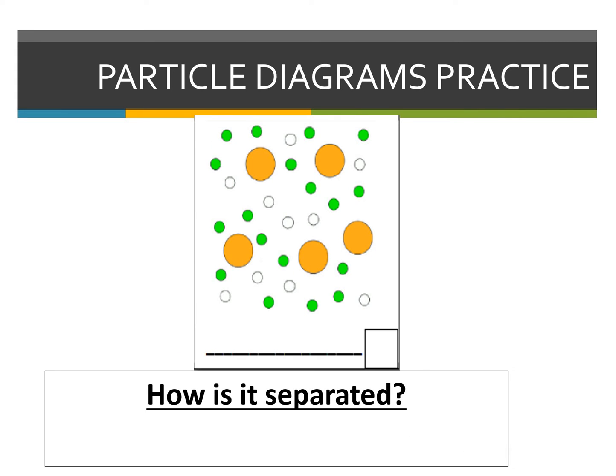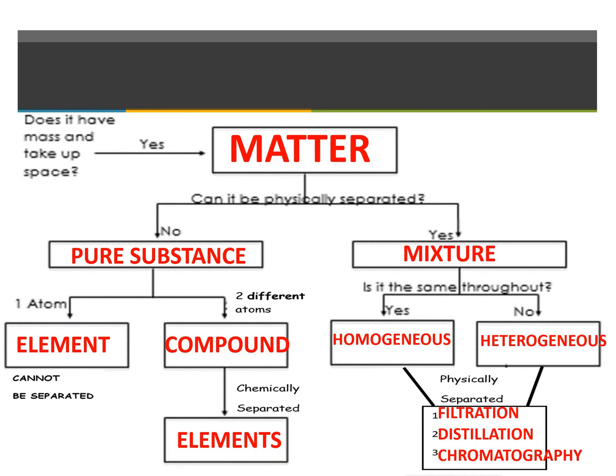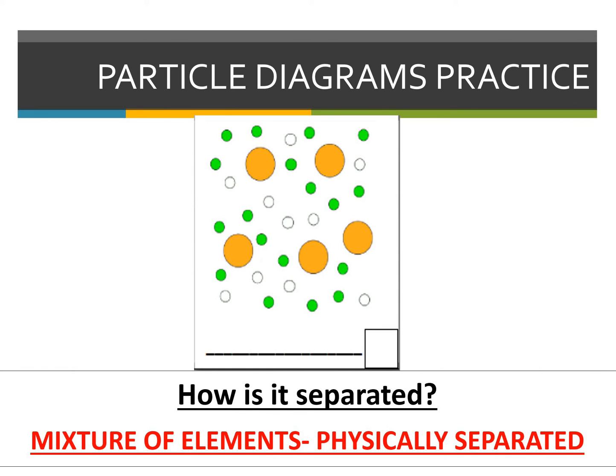This next item — let's take a quick look. We have different particles: green particles, orange particles, and white particles. These particles themselves are not touching, so they're just physically in the same place. We have three different types of elements. Did they look the same throughout? No — everything looked different. So that means I'm a heterogeneous mixture from the particle diagram, which means I can physically separate it through filtration, distillation, or chromatography. So this is a mixture of elements, and it can be physically separated.